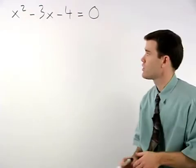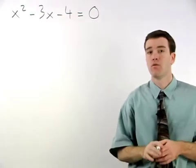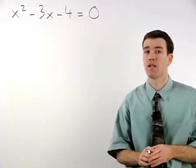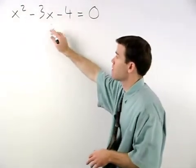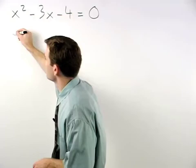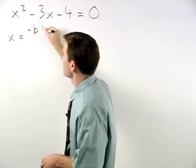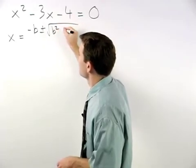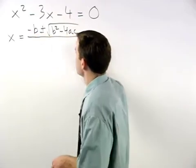To solve this equation using the quadratic formula, remember from the previous example, the quadratic formula states that the variable we're solving for, in this case x, is equal to negative b plus or minus the square root of b squared minus 4ac all over 2a.